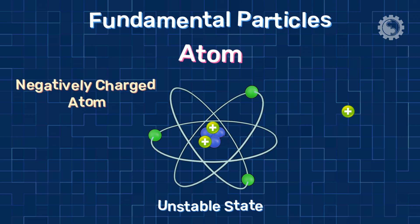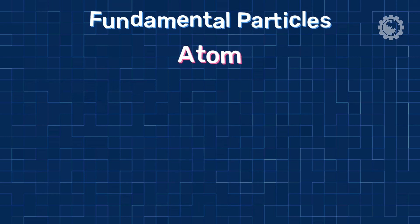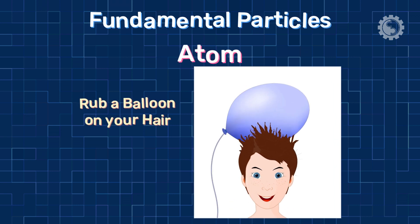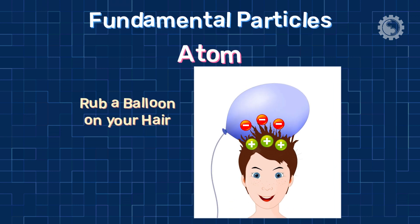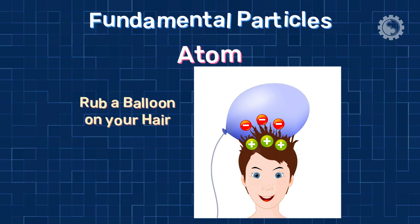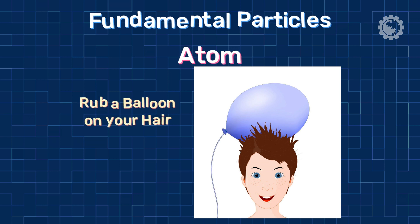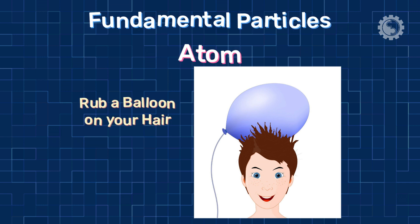Here, the atom is trying to balance by adding a new particle. For example, when you rub a balloon on your hair, the balloon becomes negatively charged and your hair becomes positively charged. This is because the balloon is rubbing off electrons from your hair. When you let go of the balloon, it will stick to your hair because of the attraction between the opposite charges.